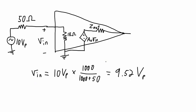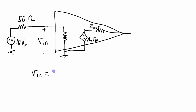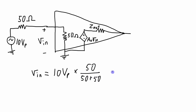Now, what happens if this 1-kilohm resistor was reduced significantly to match this 50-ohm resistor? V-in would equal the 10-volt peak from the source times 50 over (50 plus 50), and that equals 5 volts peak. So if the input impedance of the amplifier and the output impedance of the source are equal to each other, then the voltage from the source is actually going to be cut in half by the time it is applied to the amplifier.